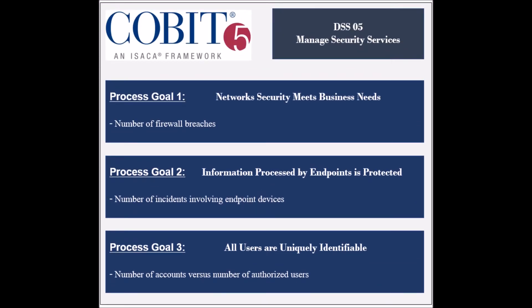The first process goal is to ensure that network security meets business needs, and its achievement is measured by the number of firewall breaches. The second goal is to ensure the security of information processed by endpoint devices, and its achievement is measured by the number of incidents involving endpoint devices. The third goal is to ensure that users are uniquely identified and have been granted the appropriate access, measured by the number of accounts versus the number of authorized users.